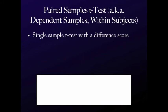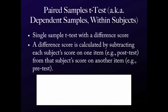But the math is the same, and I'm going to show you here in just a second. The difference score is calculated by subtracting each subject's score on one item, such as a post-test, from that subject's score on another item, such as a pre-test.